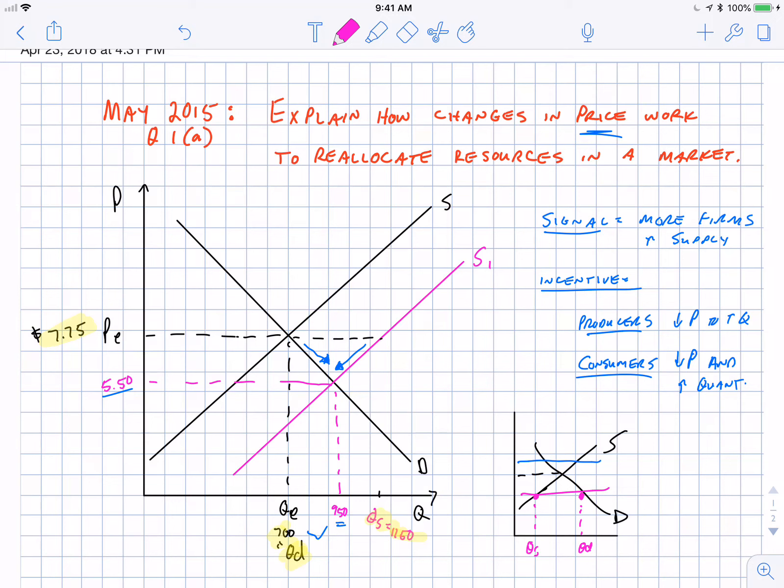Price floors then have the opposite problem. You have quantity oversupplied, greater than quantity demanded at that price. And this results in a surplus of goods.